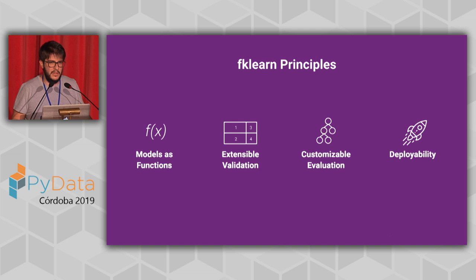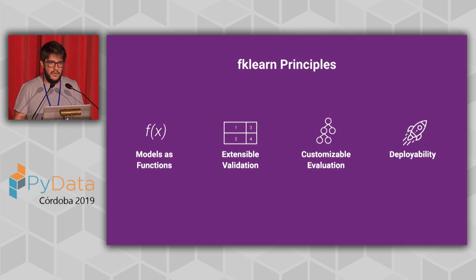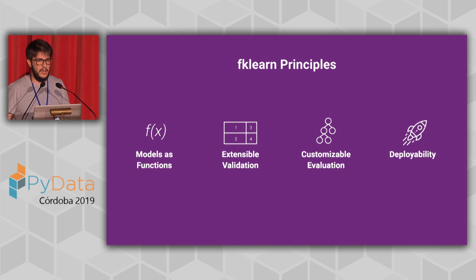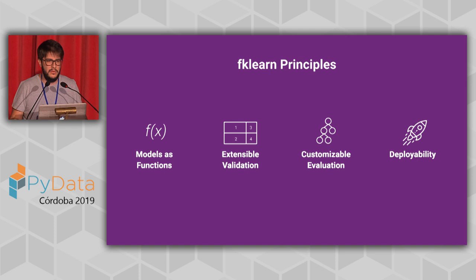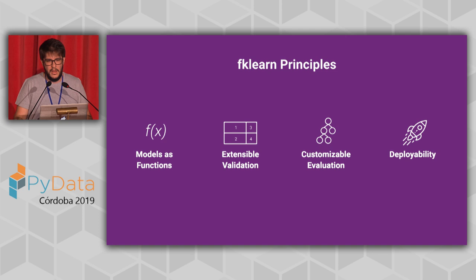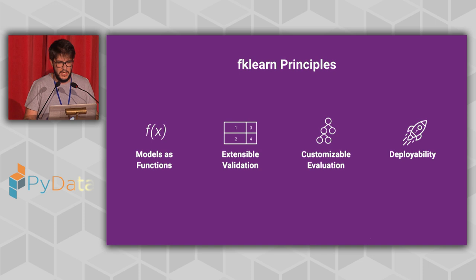The second pillar is good validation. We built a library where you can build a very extensible and complex set of validations for your model, and it's very easy to validate that. At the same time, it needs to be very customizable because we have very different sets of problems — we work with credit models, but we also have NLP models and models for customer service. Each context has a very different way of validating models. And finally, we needed something that scaled really fast, so we could go from a research Jupyter notebook very fast into production once the model is fully validated.